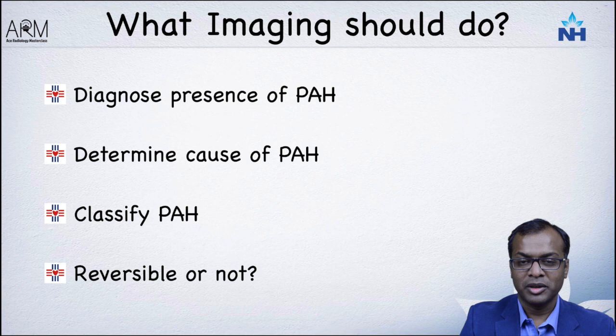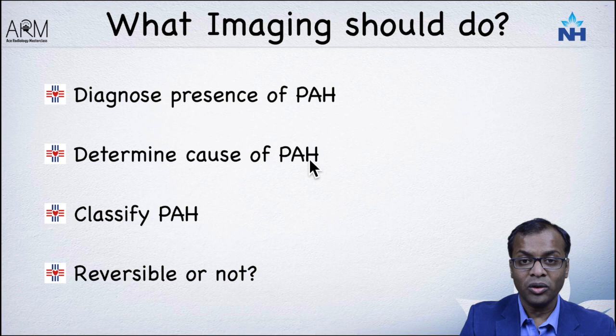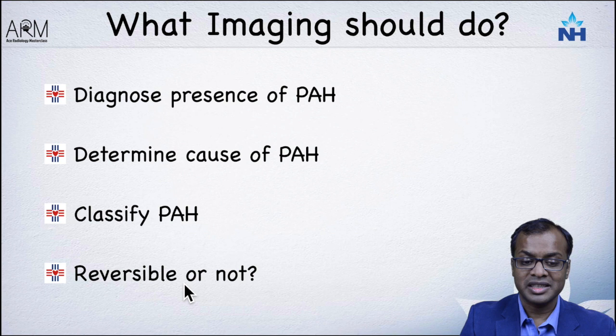The important role of imaging in pulmonary artery hypertension in congenital heart disease is: first and foremost, diagnose whether it is present or not. Then look for the cause. Once the cause is determined, classify pulmonary artery hypertension and determine whether it is reversible or irreversible — because if reversible, it needs surgical correction; if irreversible, we manage medically.